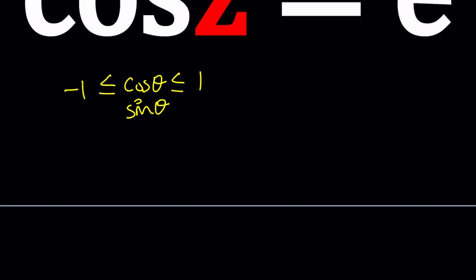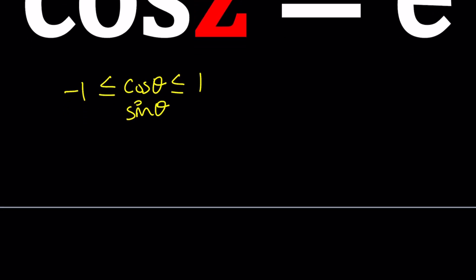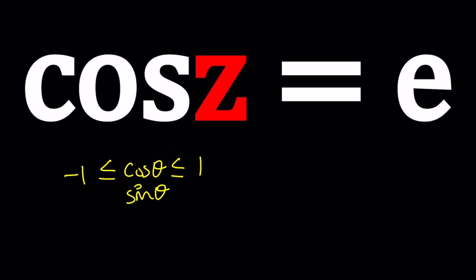But this is only when theta is real. Now, what happens if theta isn't real? Then we don't have to abide by that. But take a look at this equation. Do you think e is less than or equal to one? No. E is about 2.7.